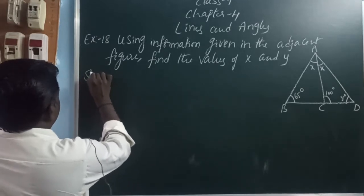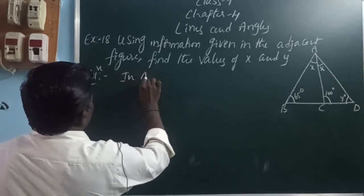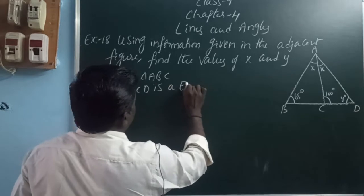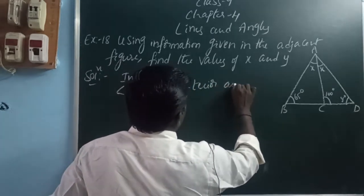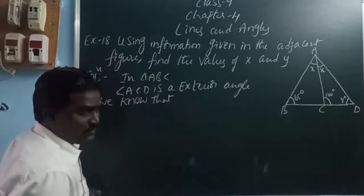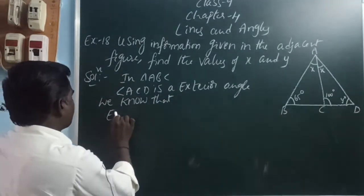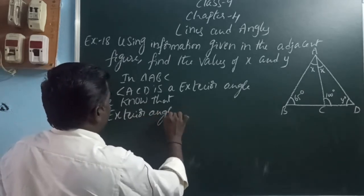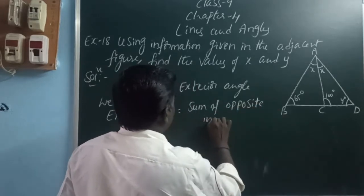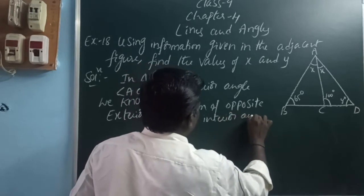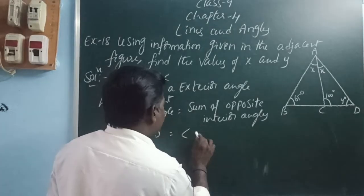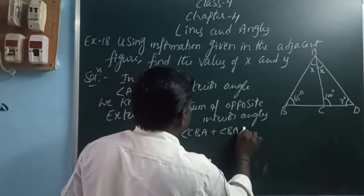In triangle ABC, angle ACD is an exterior angle. We know that the exterior angle is equal to the sum of opposite interior angles. So, angle ACD is equal to angle CBA plus angle BAC.